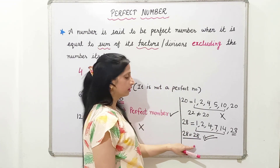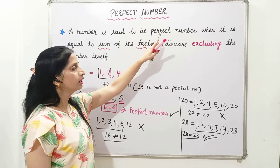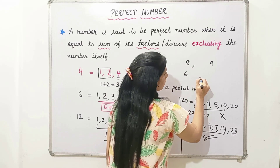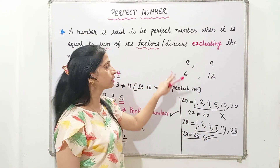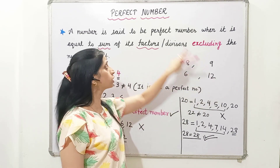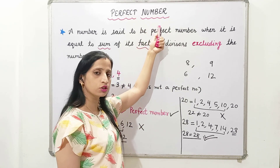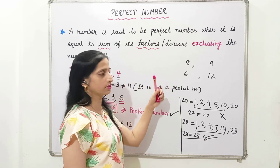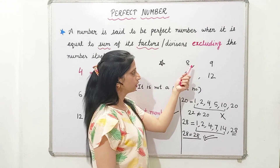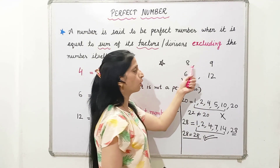So it's a very easy topic. Many times in Olympiad exams, questions based on perfect numbers come like this — 4 options will be given: 8, 9, 6, and 12. The question will be: which of the following is a perfect number? If you know the concept, you can easily solve it and find that 6 is the perfect number from all these options.